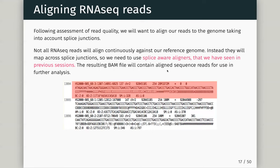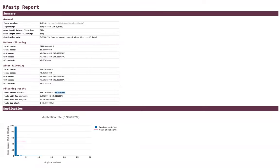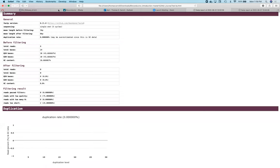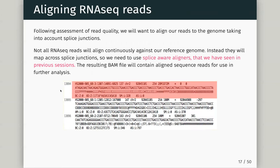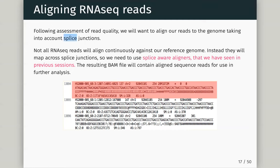If you've worked with a genome center, as we saw, 99% of reads passed filtering so we didn't really need to throw anything away. We now want to align our reads to the genome, and we need to take into account splice junctions because this is RNA-seq. Not all reads will align contiguously against our reference genome — they will map across splice junctions, going from one exon to another. So we need to use a splice-aware aligner.